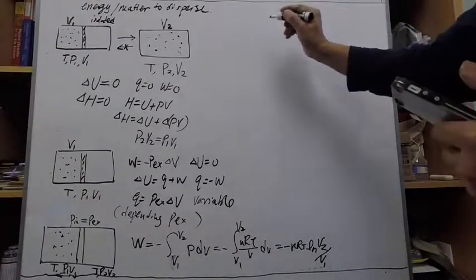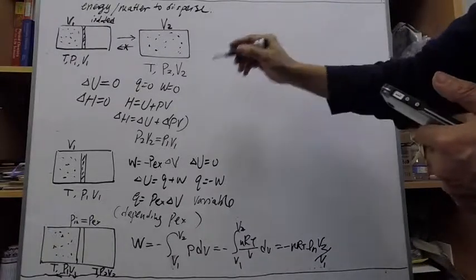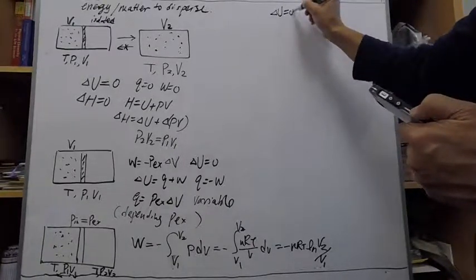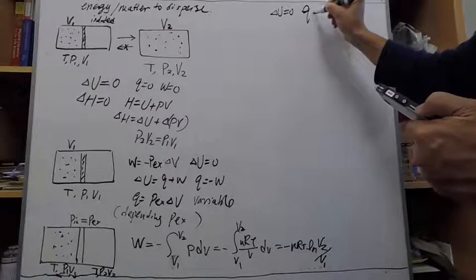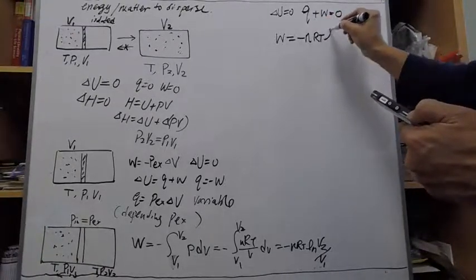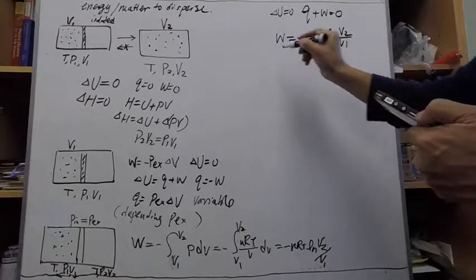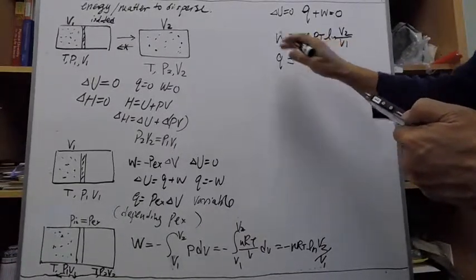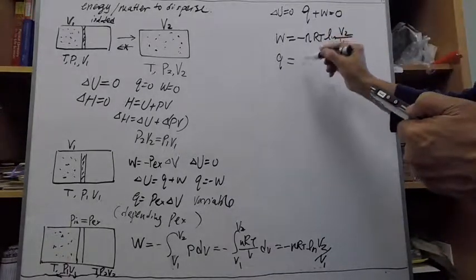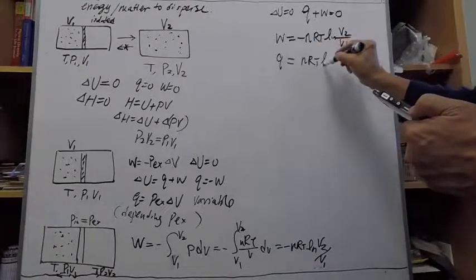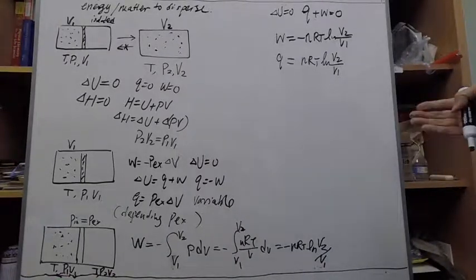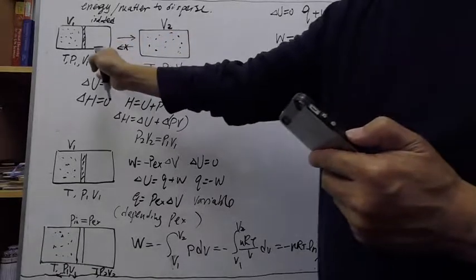Going back to the first law of thermodynamics: for an isothermal process for an ideal gas, the internal energy change is zero, which means heat and work add together to be zero. Since work equals −nRT ln(V₂/V₁), the heat required for the ideal gas to do this work is Q = nRT ln(V₂/V₁). What we have accomplished is that for a process that clearly can happen spontaneously in this direction, we can achieve the same change of state via a process where we can actually measure the work or heat involved.